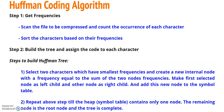Step 2: we build the tree and assign the code to each character. To build the Huffman tree, we follow these steps. First, select the two characters with the smallest frequencies and create a new internal node with frequency equal to the sum of the two nodes' frequencies. Make the first selected node the left child and the other node the right child, then add this new node to the symbol table. In the second step, repeat the above process until the heap contains only one node — that remaining node is the root node, and the tree is complete.